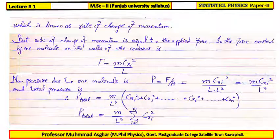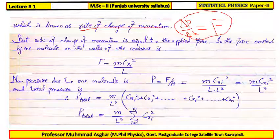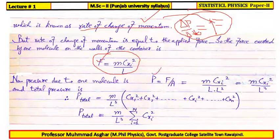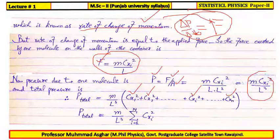This equation gives us the rate of change of momentum, delta P / delta t. As we know, rate of change of momentum equals force according to Newton's second law. So we can set this rate of change of momentum equal to force F = mC_xi²/L. Knowing the force, we can find the pressure — that is, force per unit area — and we get a relation for pressure. Total pressure can be found by summing all the velocities of the particles along the x-axis, giving the total pressure along the x-axis.